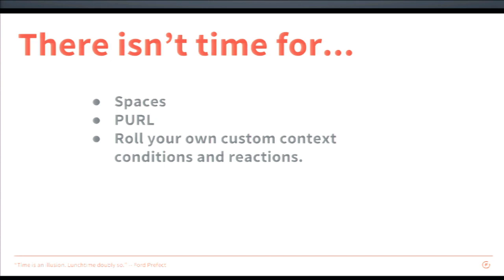Other things worth looking into if you weren't familiar with context: Spaces, which allows you to have what feels like totally different sites and different site-wide variables like different site names depending on context conditions — very powerful for multi-site. Perl, which is context per URL — this is what I use to get four different URLs producing different behaviors. And of course, the ability to roll your own custom context conditions and reactions using C-tools plug-ins, which are confusing to learn but absolutely must-have for large-scale Drupal sites.